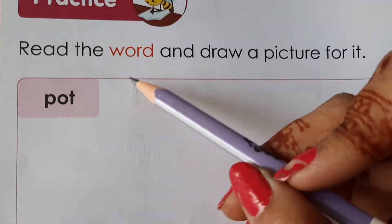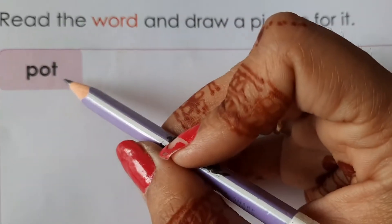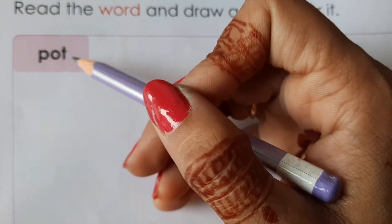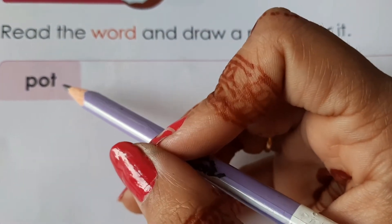Now on page number eight you have a practice exercise. Read the word and draw a picture for it. The word is given to you over here. Read this word: p-o-t. What word will it be? Pot.